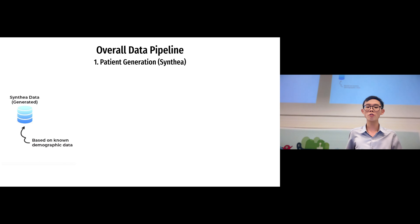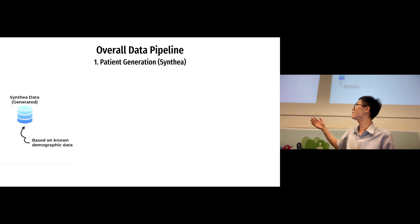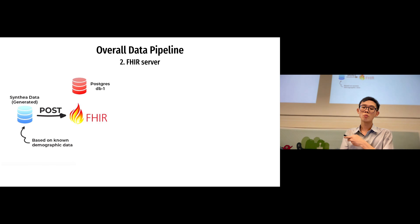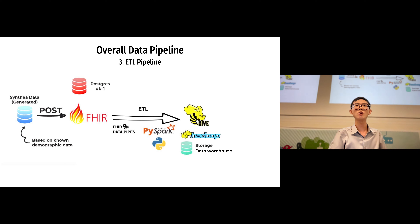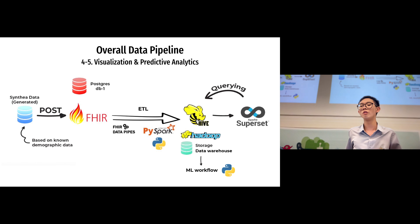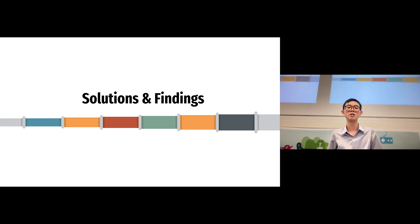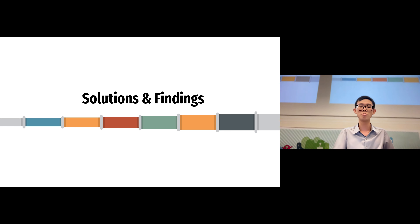The overall data pipeline is as follows. We start off by synthetically generating our patients, then we post them to the FHIR server, and then we perform ETL. When all the data is loaded into the data warehouse, it is ready for visualization and predictive analytics. Now let's go a bit further into each of these components.